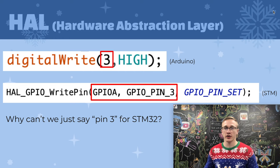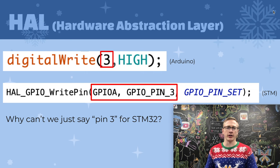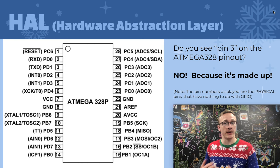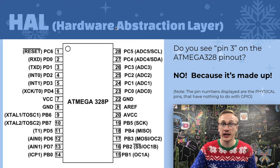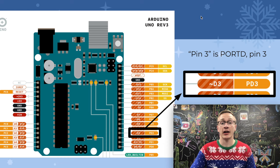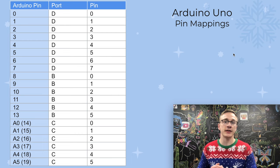If we break this down, the first thing we need to do is tell the microcontroller what pin we care about. For Arduino, we just say the number 3. But for STM32, we have to tell it a port and a pin. Why can't we just tell STM32 to turn pin 3 on? That's entirely because Arduino decided to sacrifice performance for code readability. The actual microcontroller on the Arduino Uno is an ATmega328p, and if we scan through its pinout, we won't see pin 3 called out anywhere — because Arduino made it up. Looking at the Arduino pinout, pin 3 actually has PD3 next to it, meaning it's port D, pin 3. Any time you call digitalwrite with an Arduino, it has to first look up the port and pin before it can actually turn it on or off.